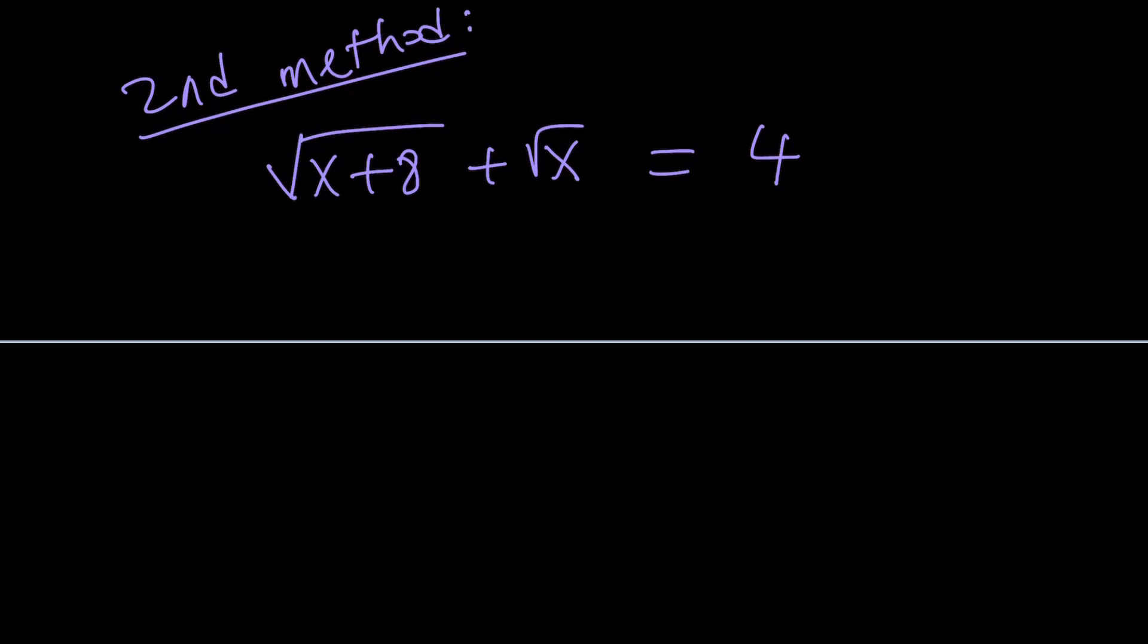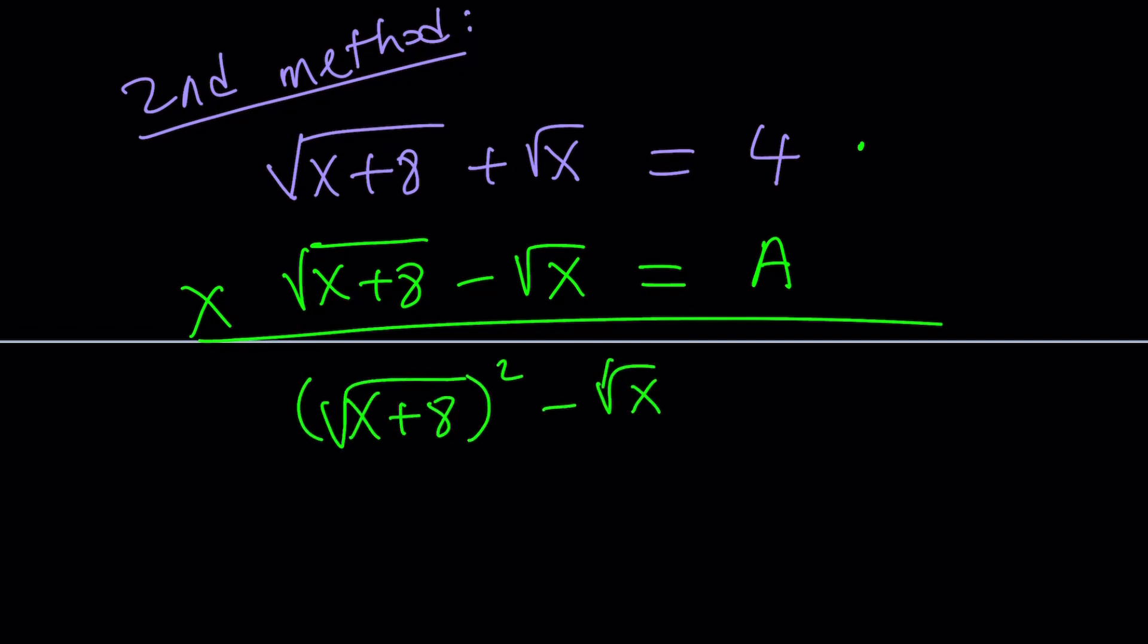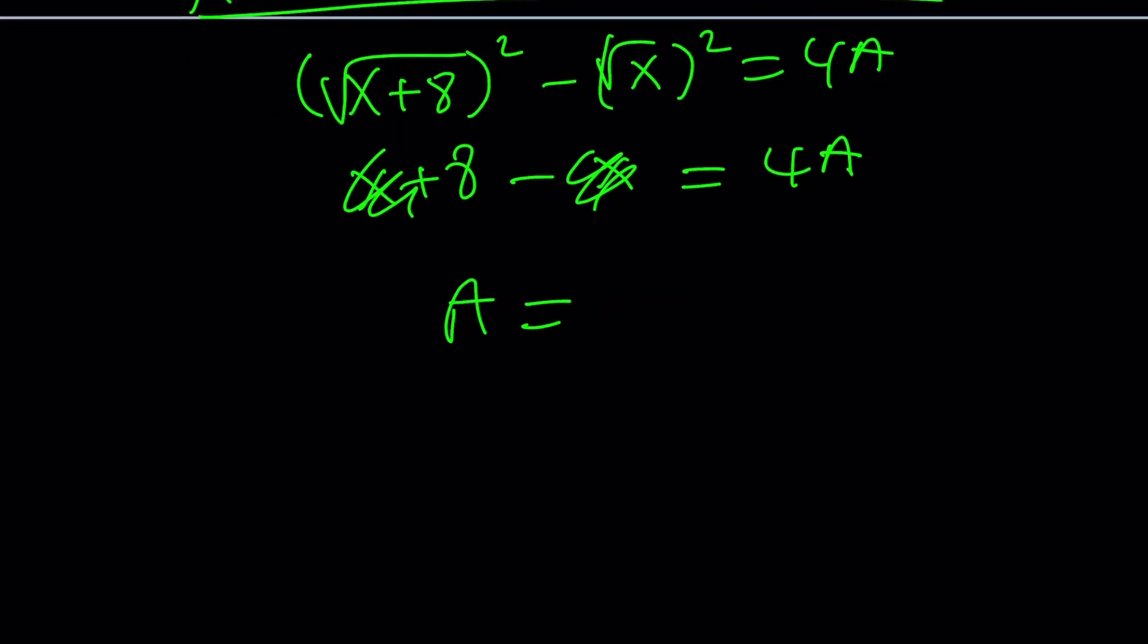So I'm going to write the conjugate of this expression. Why? Because I'm going to multiply them. The radical conjugate for this expression is going to be square root of x plus 8 with a minus sign. And I don't know what the second one is. This is 4, but I don't know what the second one is. So let's call it capital A. And then I'm going to multiply these two expressions. What happens if you multiply two conjugates? A plus B multiplied by A minus B becomes A squared minus B squared. And that's equal to x plus 8 minus x. That's great because you get rid of the radicals. And then x cancels out and you end up with 8. 4A equals 8, which means A equals 2.